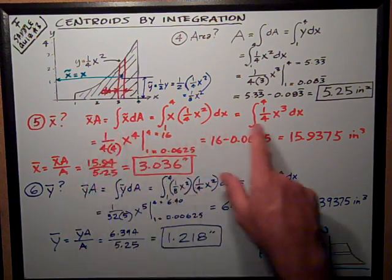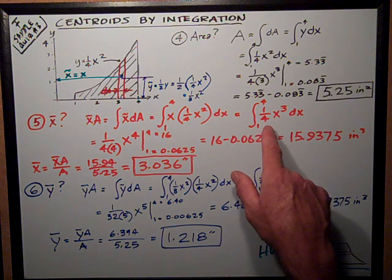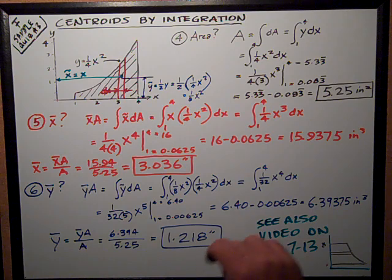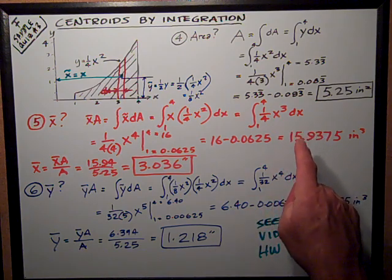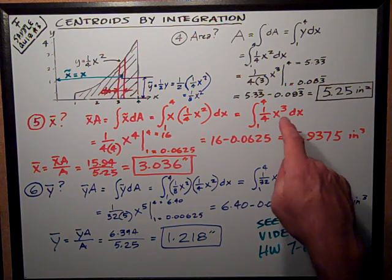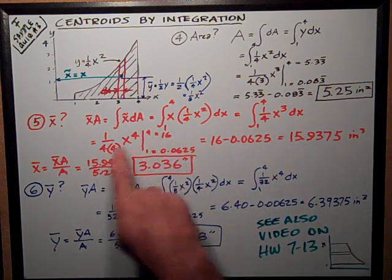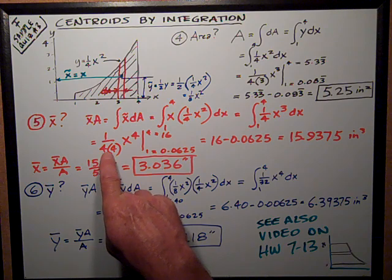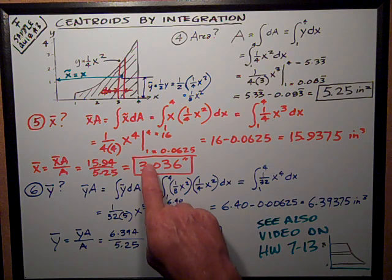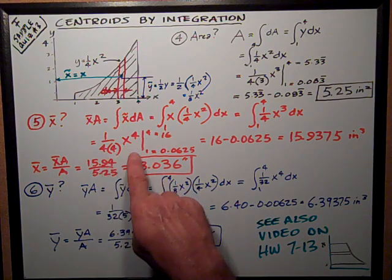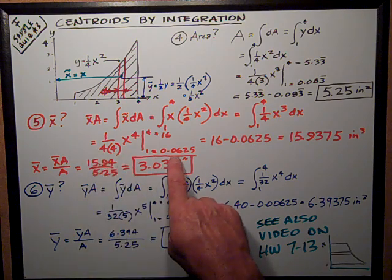Combine the x terms, I get that x-bar A equals the integral of one-fourth x cubed dx. Evaluating that, remember this is something you've got to know: the integral of x to the n power is x to the n plus one power over n plus one. That evaluates out to one-fourth times four on the bottom times x to the fourth, evaluated from one to four. At one, x equals one, this works out to be one-sixteenth, which is 0.0625.